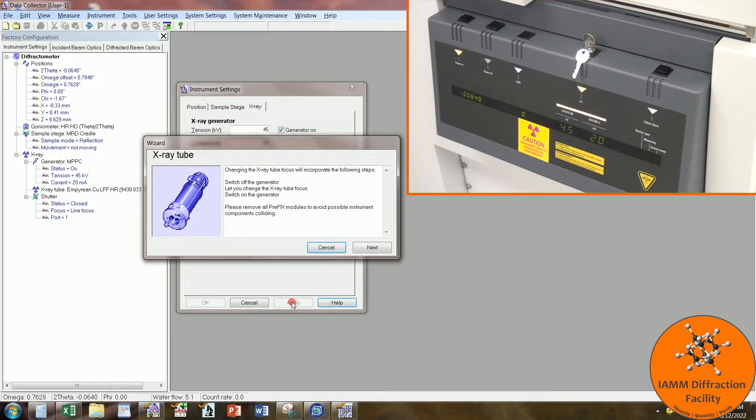This says please remove all prefix modules but nothing inside really moves for this process so I will ignore this and just click next. You should then see the voltage and amperage decrease and eventually they will go to zero.